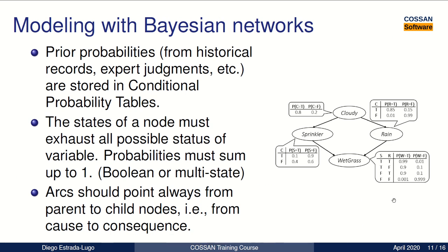So how do we model with Bayesian networks? First of all, we have to build our prior probabilities. We have to get the probabilities from historical records or expert knowledge and then store them in the conditional probability tables. Then, the states of the nodes have to be defined and they must exhaust all the possible status of the variable. Also, the probabilities attached to each of those states must sum up to one.